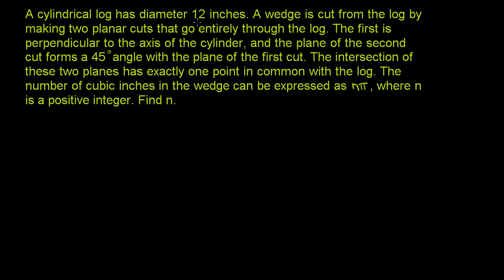A cylindrical log has a diameter of 12 inches. A wedge is cut from the log by making two planar cuts that go entirely through the log. The first is perpendicular to the axis of the cylinder, and the plane of the second cut forms a 45-degree angle with the plane of the first cut. The intersection of these two planes has exactly one point in common with the log. The number of cubic inches in the wedge can be expressed as n pi, where n is a positive integer. Find n.